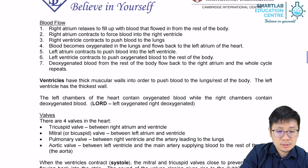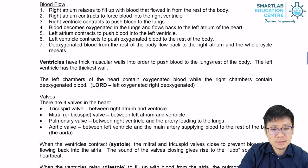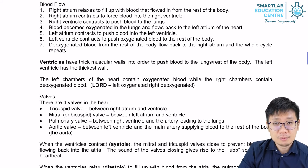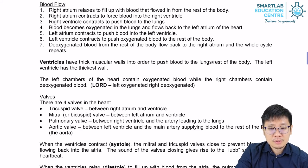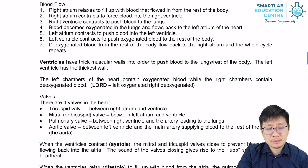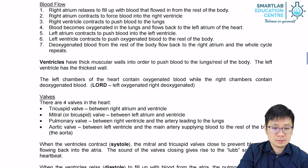To remember the blood flow: the right atrium relaxes to fill up with blood that flows in from the rest of the body. The right atrium contracts to force blood into the right ventricle. The right ventricle contracts to push blood into the lungs. Once the blood becomes oxygenated in the lungs, it flows back into the left atrium. The left atrium contracts to push blood into the left ventricle. The left ventricle then contracts to pump blood to the rest of the body. Deoxygenated blood flows from the rest of the body back into the heart on the right side.